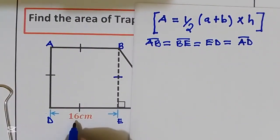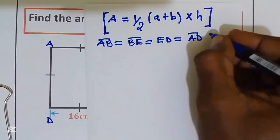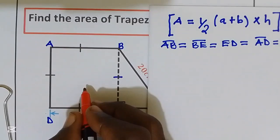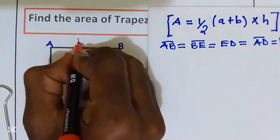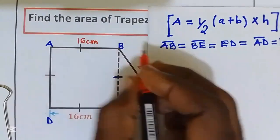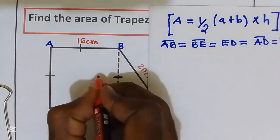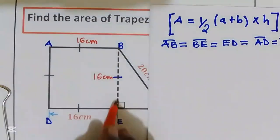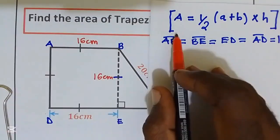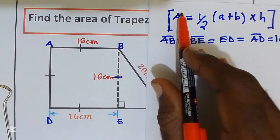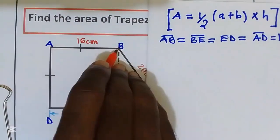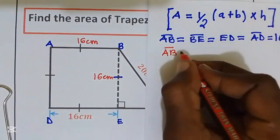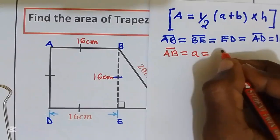All these sides are equal to 16 centimeters. So distance AB is equal to 16 centimeters, and distance BE is also equal to 16 centimeters, because this is a square. From our formula, distance AB is equal to A, which is equal to 16 centimeters.